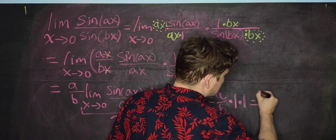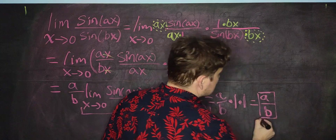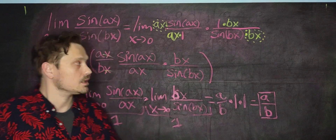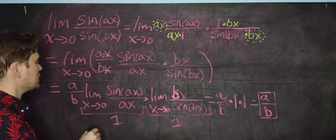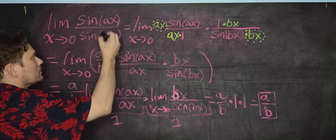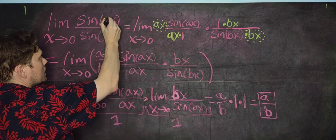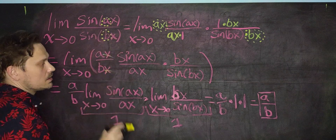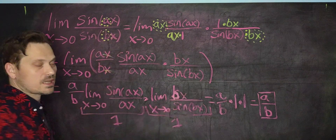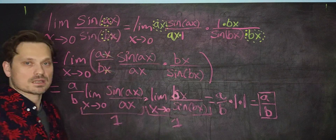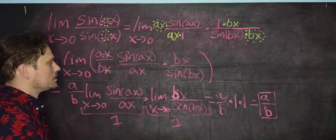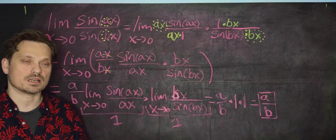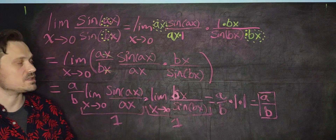In other words, take a look at the relationship: the answer is a divided by b. Whatever a is in the original expression, you divide it by b, and that becomes the value of the limit, as these steps indicate. This gets the idea across. Thank you friends — please give a like and subscribe. I hope it's been helpful and insightful. I will see you in another video.